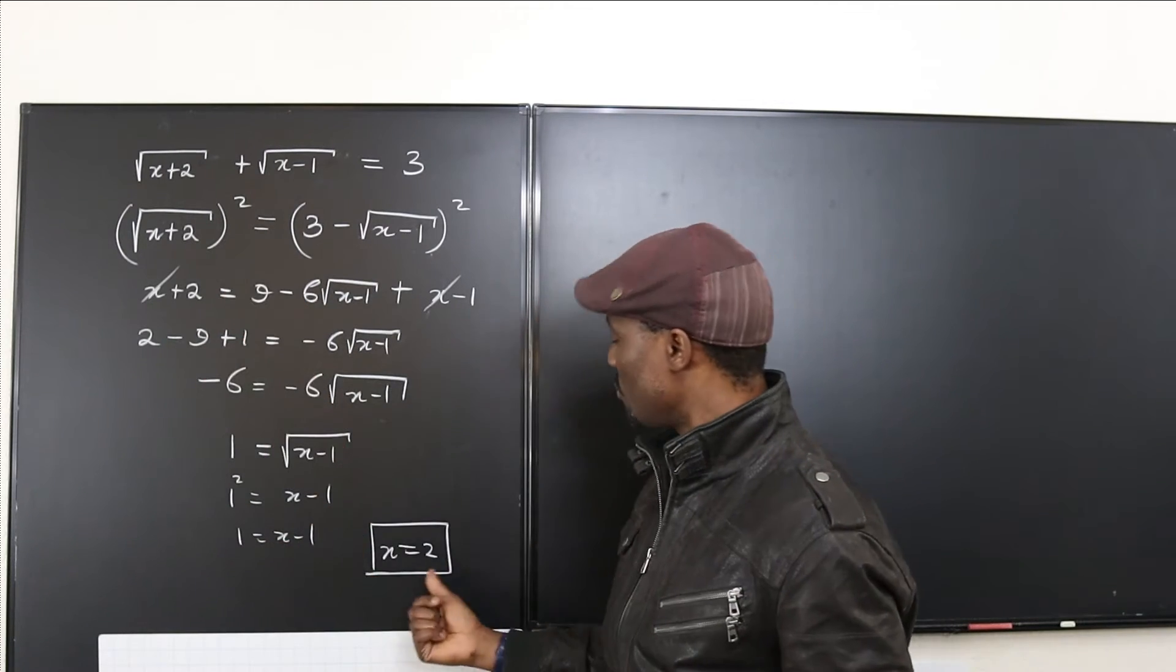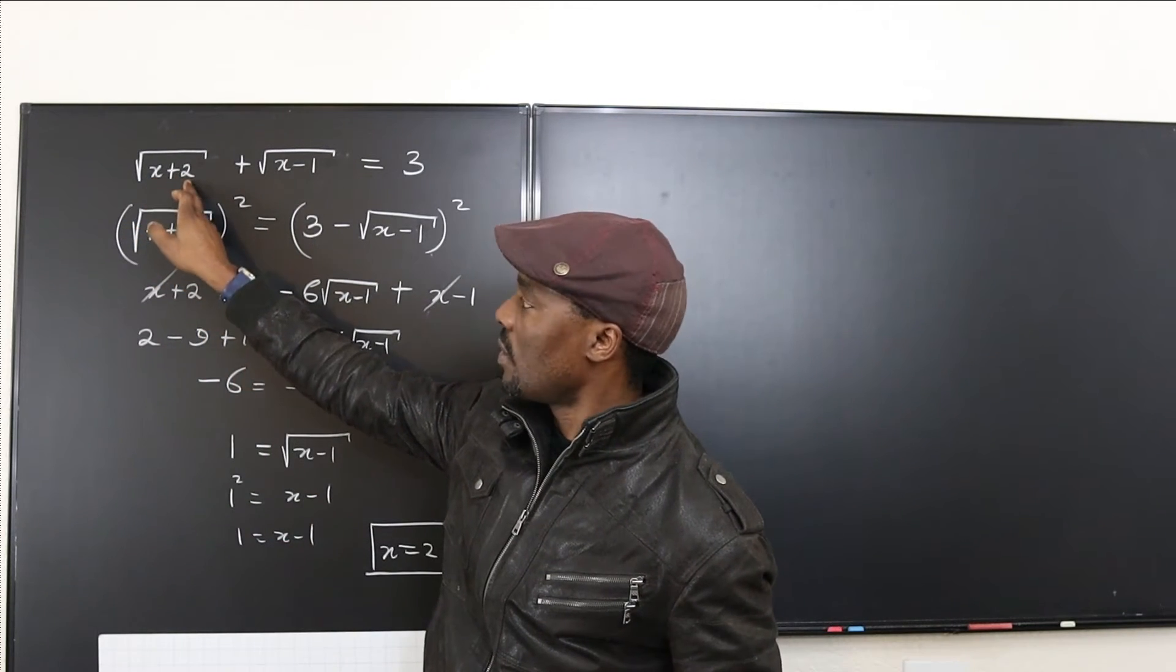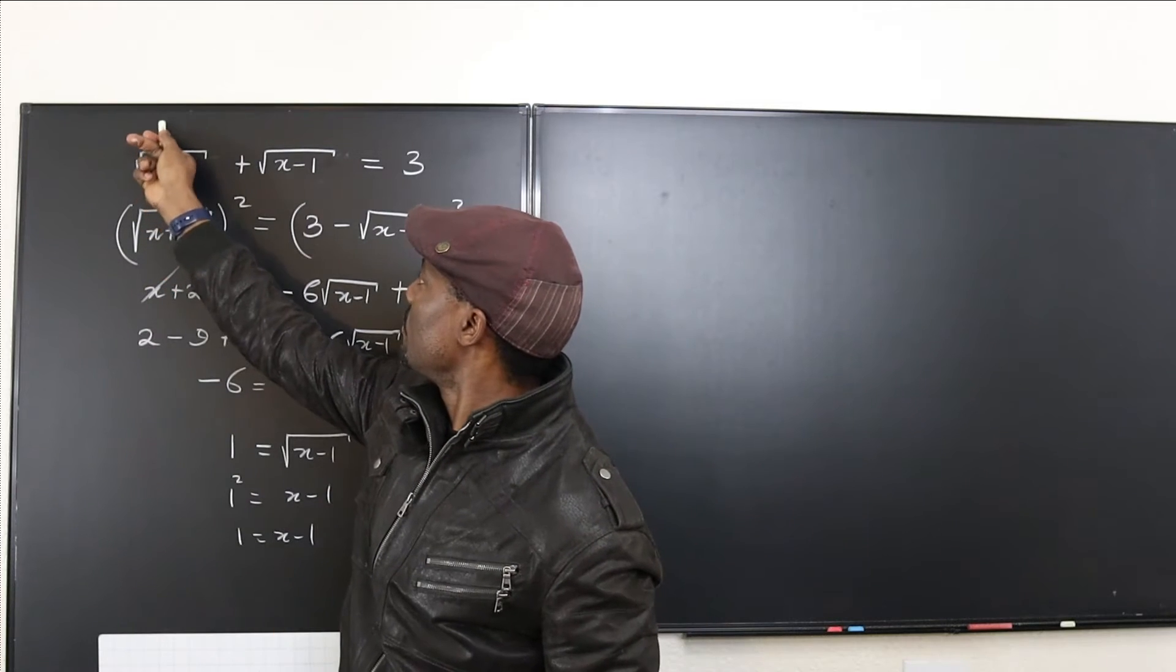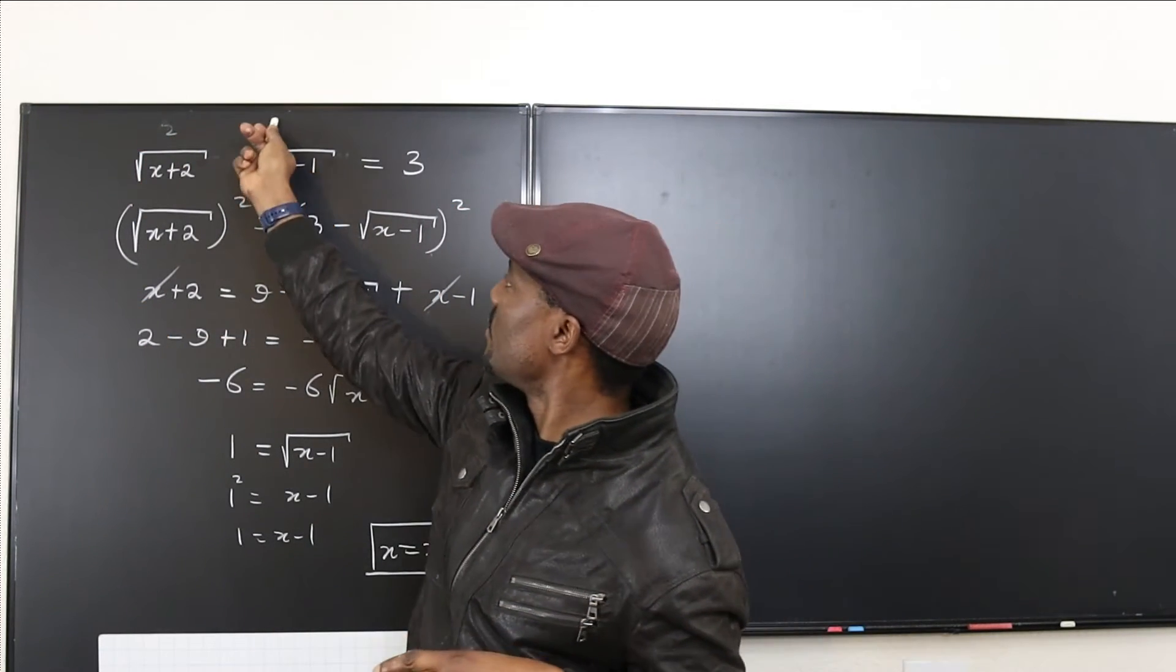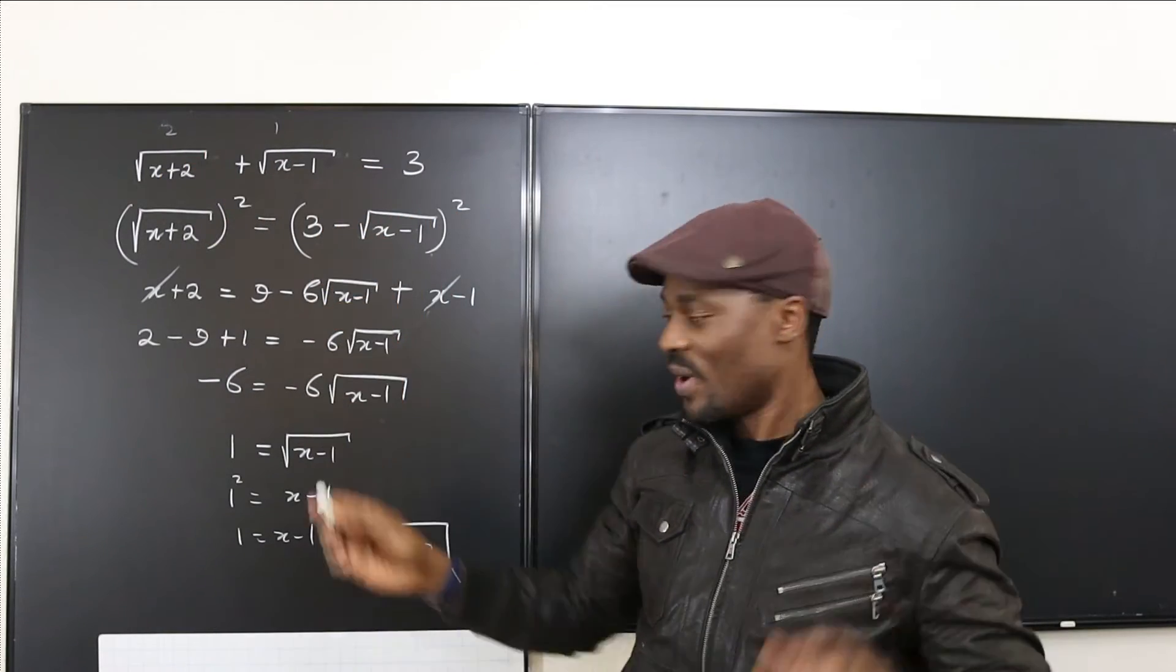Okay, but let's plug in 2 here. 2 plus 2 is 4. So the square root of 4 is 2. 2 minus 1 is 1. The square root of 1 is 1. So 2 plus 1 is 3. Whoa, that's correct.